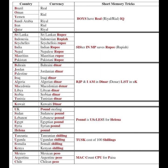Column four covers Pound currency countries: UK, Sudan, Lebanon, Egypt, Syria, and Helena. All of these countries use the Pound. The mnemonic is 'Pound is useless for Helena' — where U stands for UK, S for Sudan, L for Lebanon, E for Egypt, S for Syria, and Helena. Pound is obviously never useless, but this helps you remember these countries deal in Pounds.